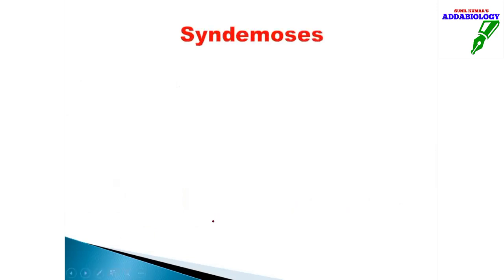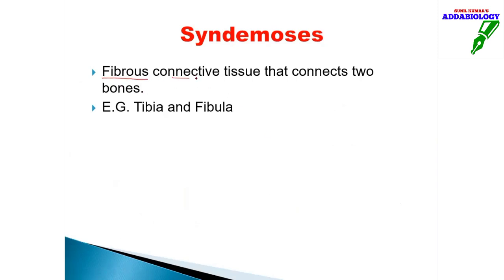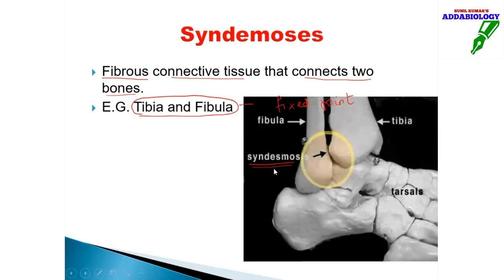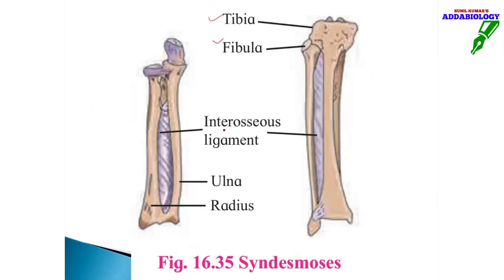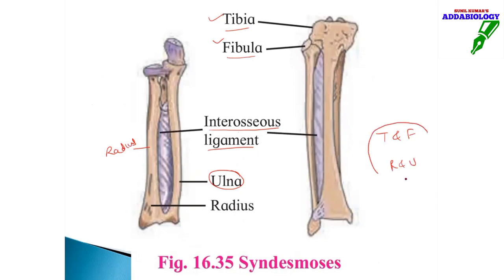The next fixed joint is syndesmosis, which is made up of fibrous connective tissue that connects two bones. The example is tibia and fibula — they are in the category of fixed joints and never move. The gap between them is filled by the interosseous membrane. Similarly, radius and ulna are also in this category. Tibia-fibula and radius-ulna show no movement, making them a type of synarthrosis called syndesmosis.